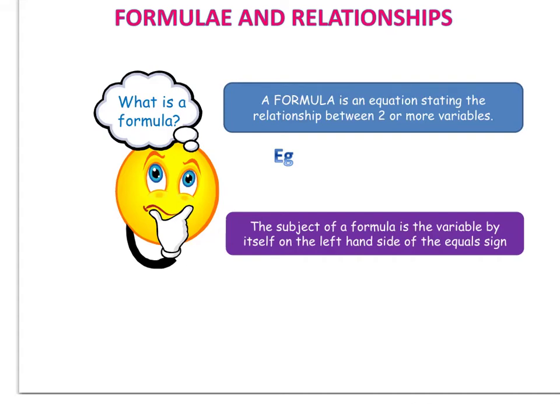Today's video is going to look at formulae and relationships. A formula is just like an equation — it's got an equal sign in it, but in a formula we've got two or more variables. So when we've been solving equations we've been solving things like x plus 5 equals 10, which has just one variable. In a formula we have two or more variables and the formula tells us the relationship between those variables.